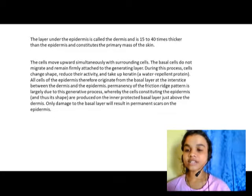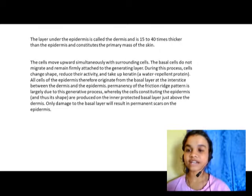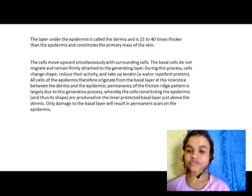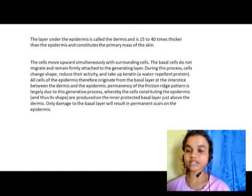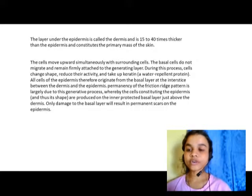The cells constituting the epidermis are produced at the inner protected basal layer just above the dermis. Only damage to the basal layer will result in permanent scars on the epidermis. The basal cells do not migrate — they remain firmly attached to the generating layer. Cells change shape, reduce activity, and take up keratin. The permanency of the friction ridge pattern is largely due to this generative process. If the basal layer is damaged, only then will permanent scarring of the epidermis appear.